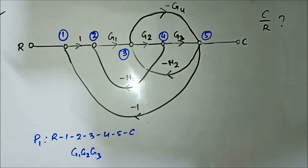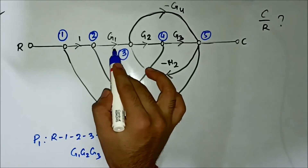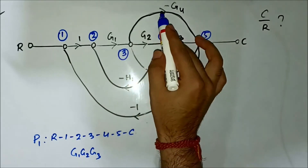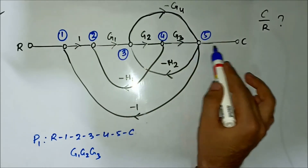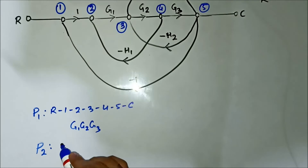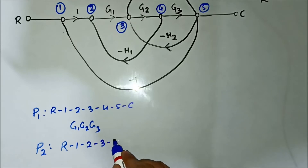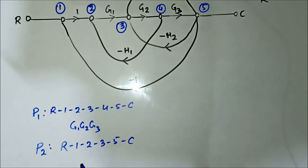Another forward path goes R→1→2→3→5→C, passing through the -G4 branch from node 3 to node 5. The gain of this second forward path is -G1·G4.